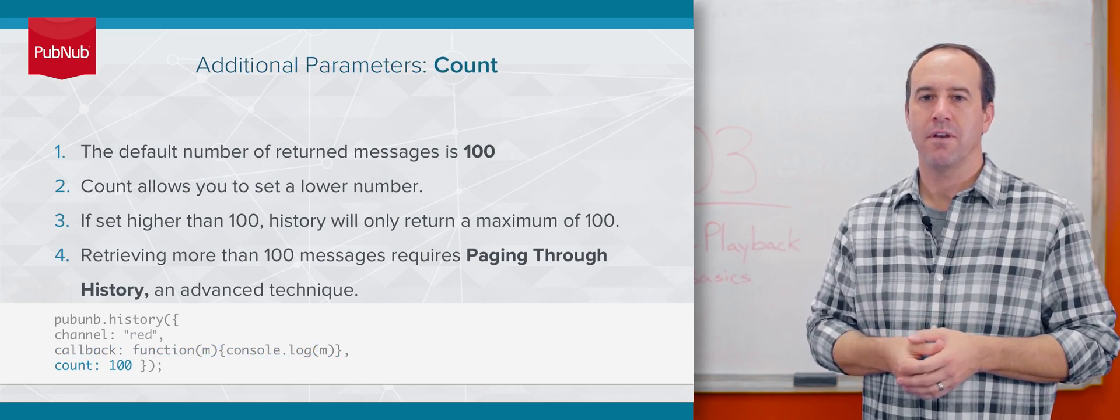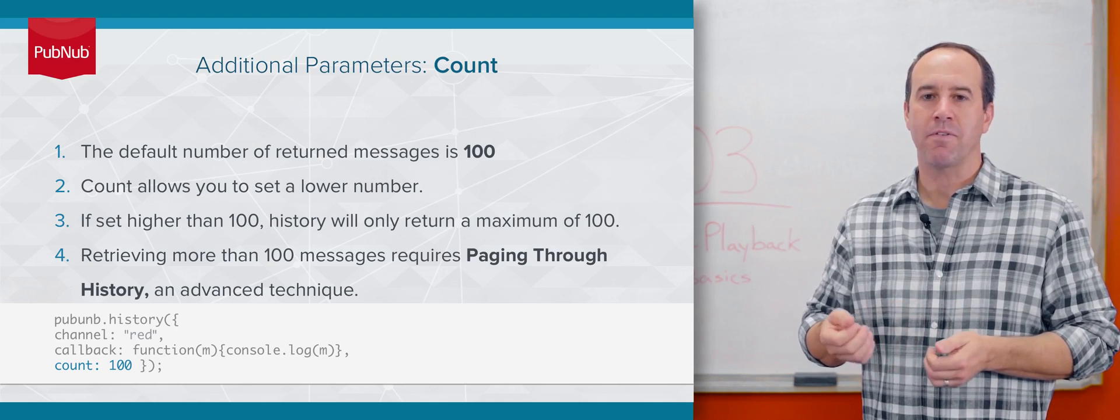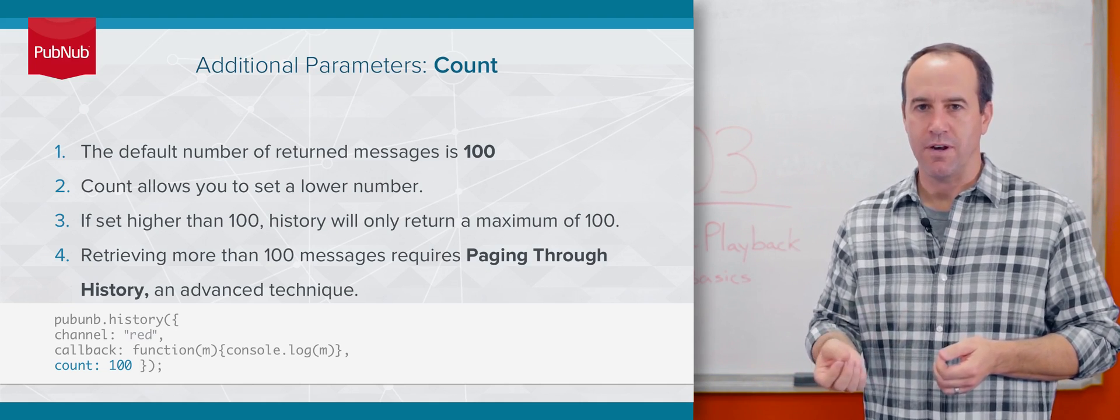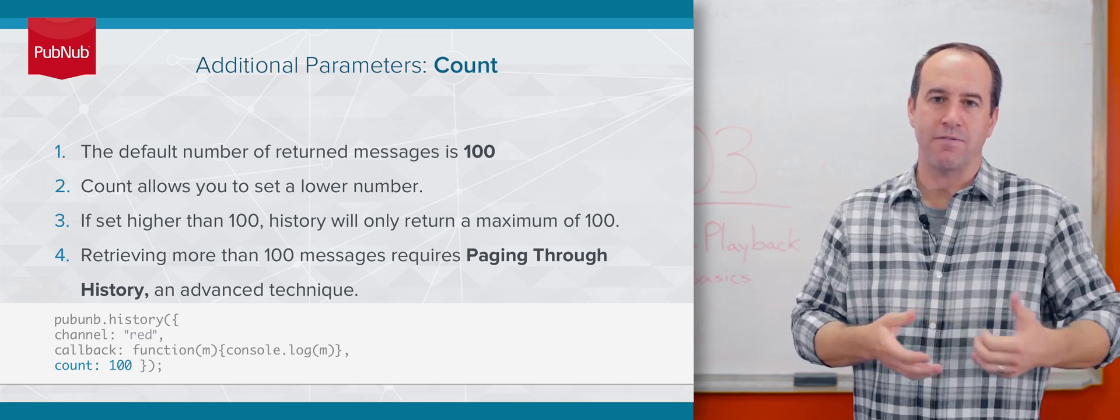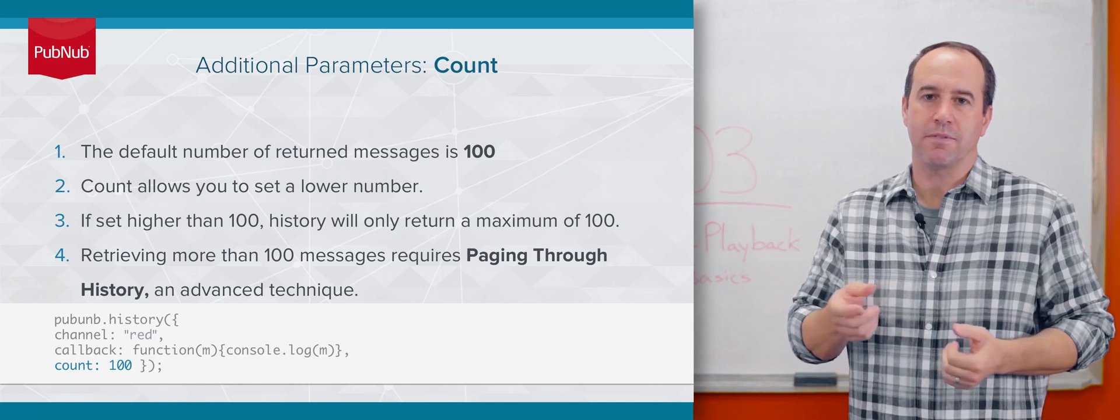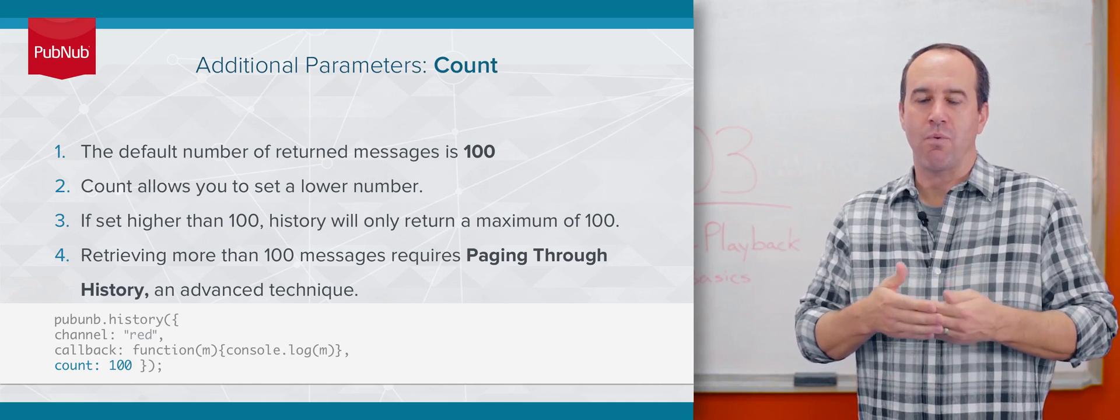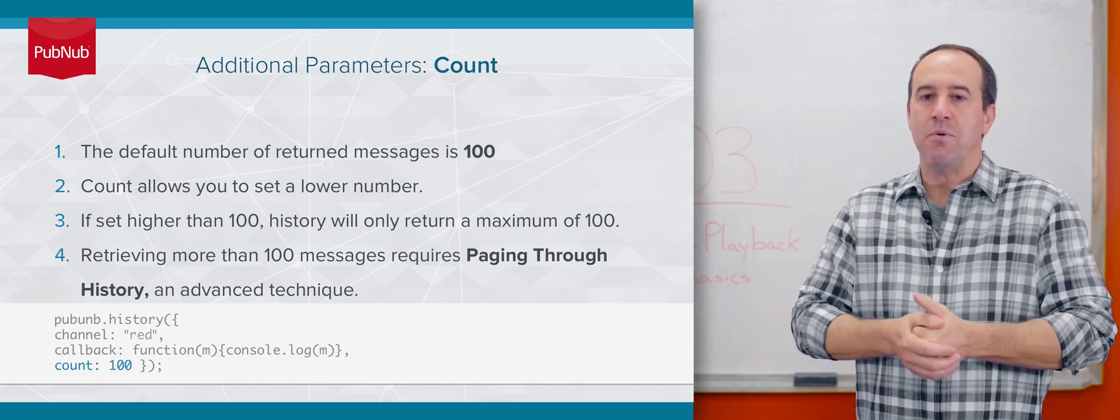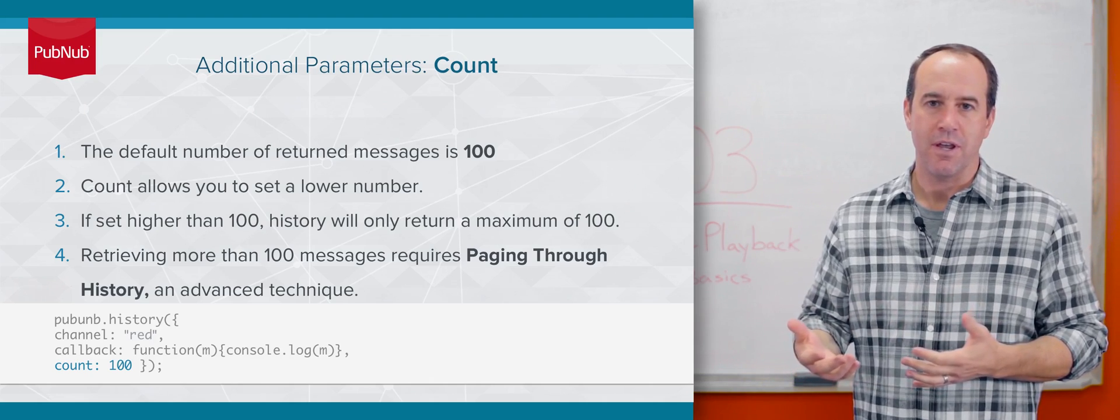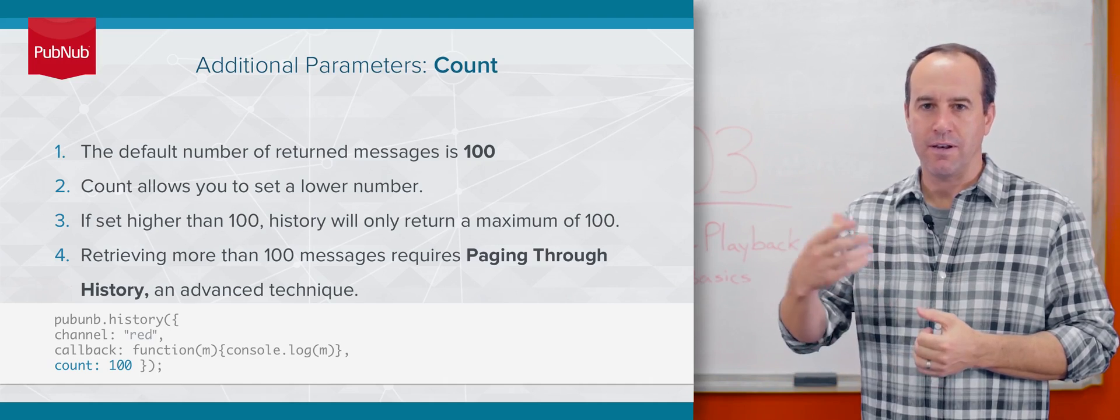The first is count. When you call History without a count parameter, the default maximum number of messages you'll receive is 100. If you want fewer messages, say the last five, you would provide the count parameter with the number five. You can't provide a count greater than 100. Even if you do, you'll only get at most 100 messages back. If you need more than 100 messages, you'll need to page through history, which we'll cover in a later course.